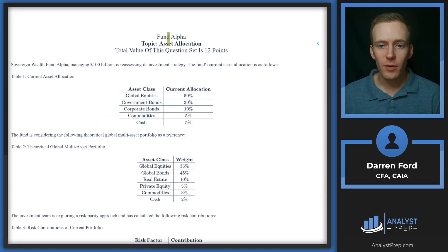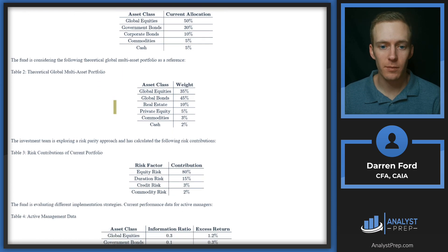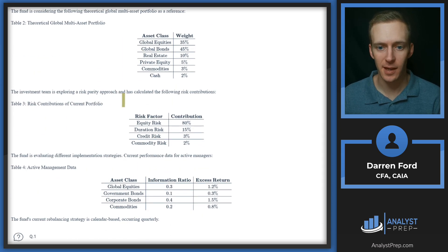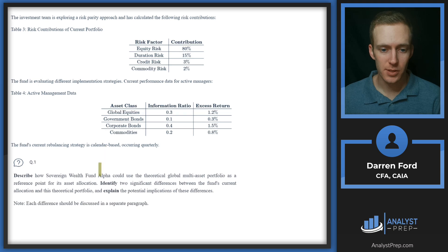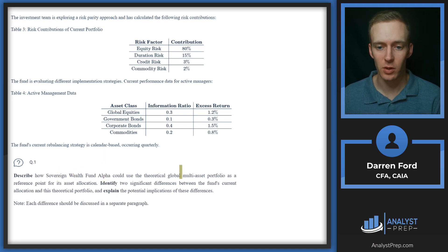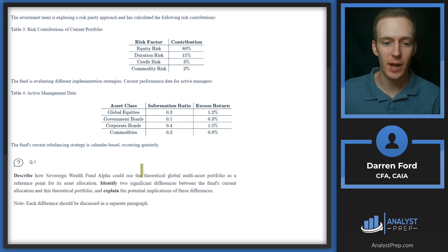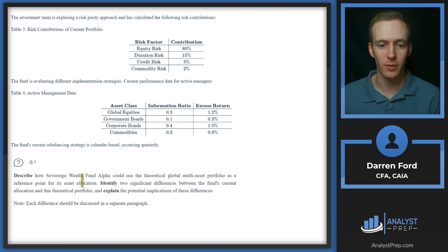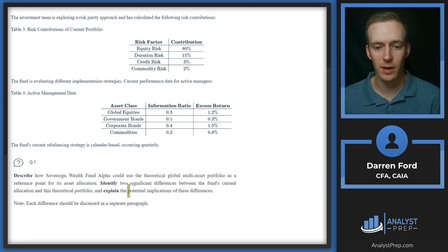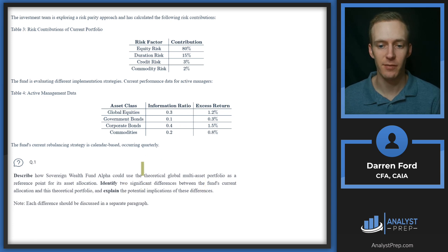We're looking at the Fund Alpha case study here on asset allocation. Let's scroll down and read the first question. Looks like we've got a lot of tables here. Describe how a sovereign wealth fund alpha could use the theoretical global multi-asset portfolio as a reference point for its asset allocation. Identify two significant differences between the fund's current allocation and this theoretical portfolio and explain the potential implications of these differences.